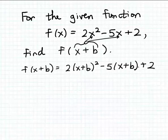So now all we need to do to finish this problem is just simplify this algebraic expression. 2 times x plus b squared minus 5 times x plus b plus 2.